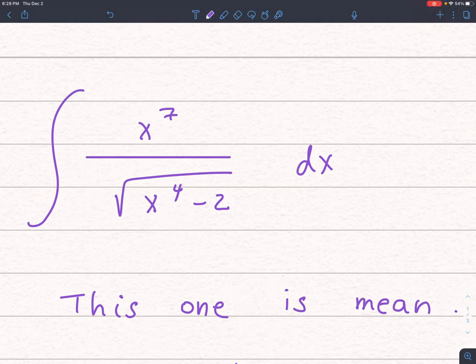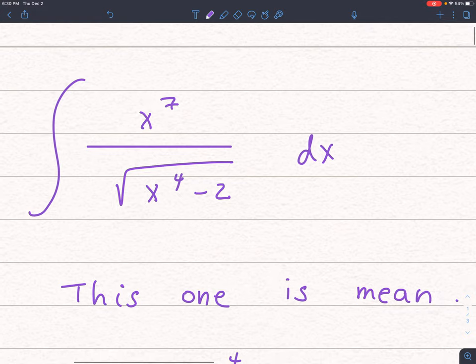All right, this is a really mean integral. The integral of x to the 7th divided by the square root of x to the 4th minus 2 dx. This one is mean. Why is it mean? Because it's not obvious at all what the u-substitution should be.